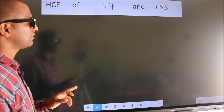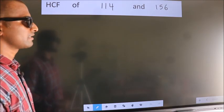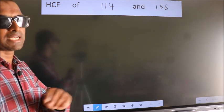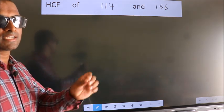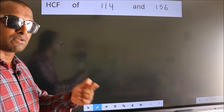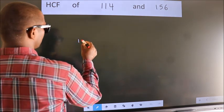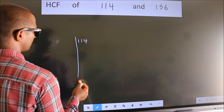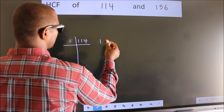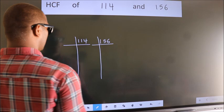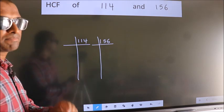HCF of 114 and 156. To find the HCF, we should do the prime factorization of each number separately. What I mean is, see, 114 here, 156 here. This is your step 1.